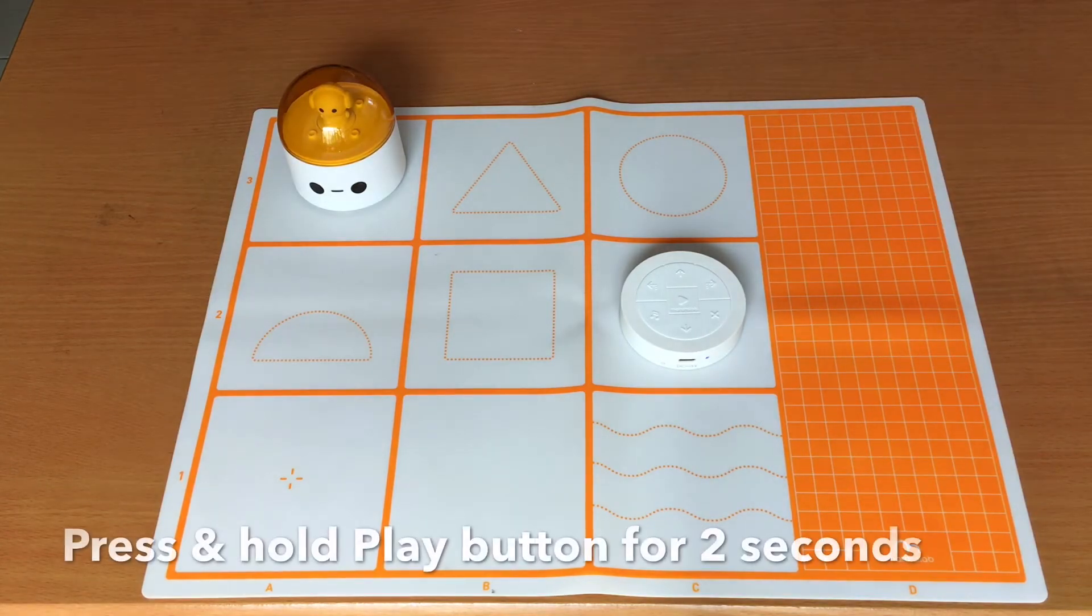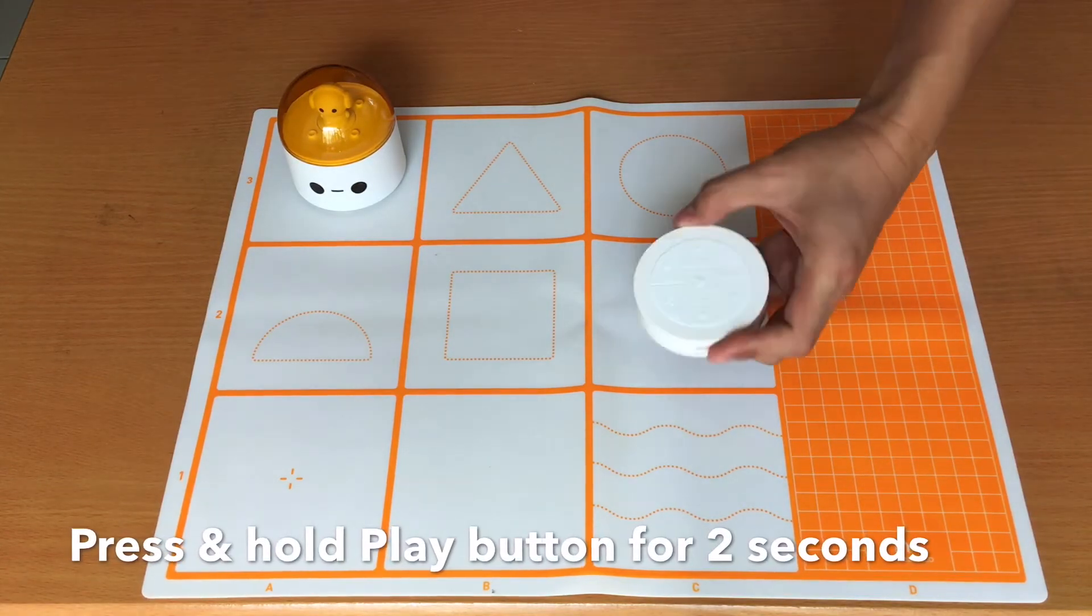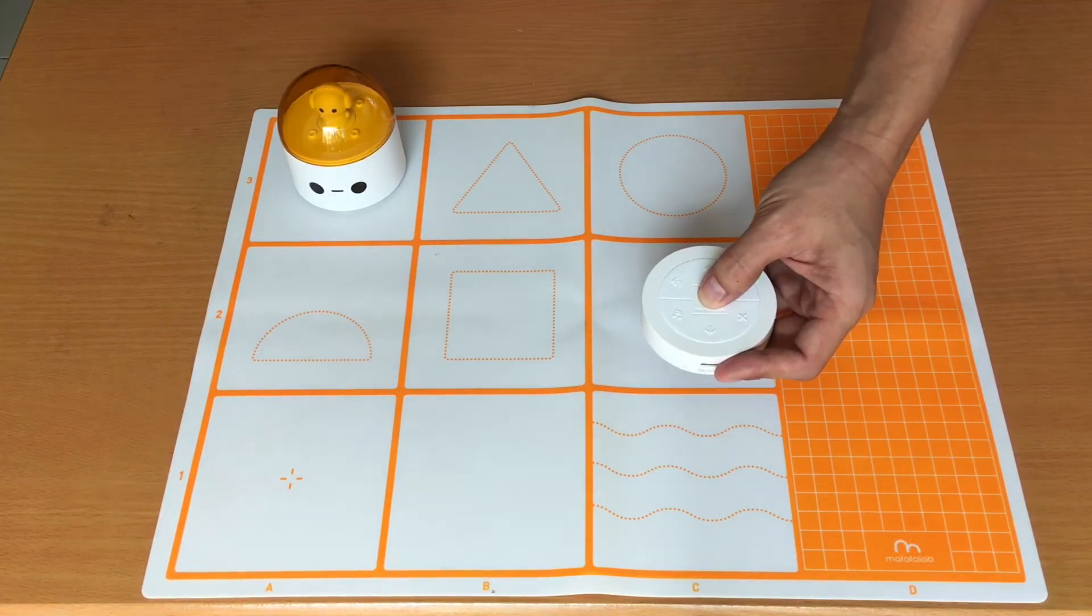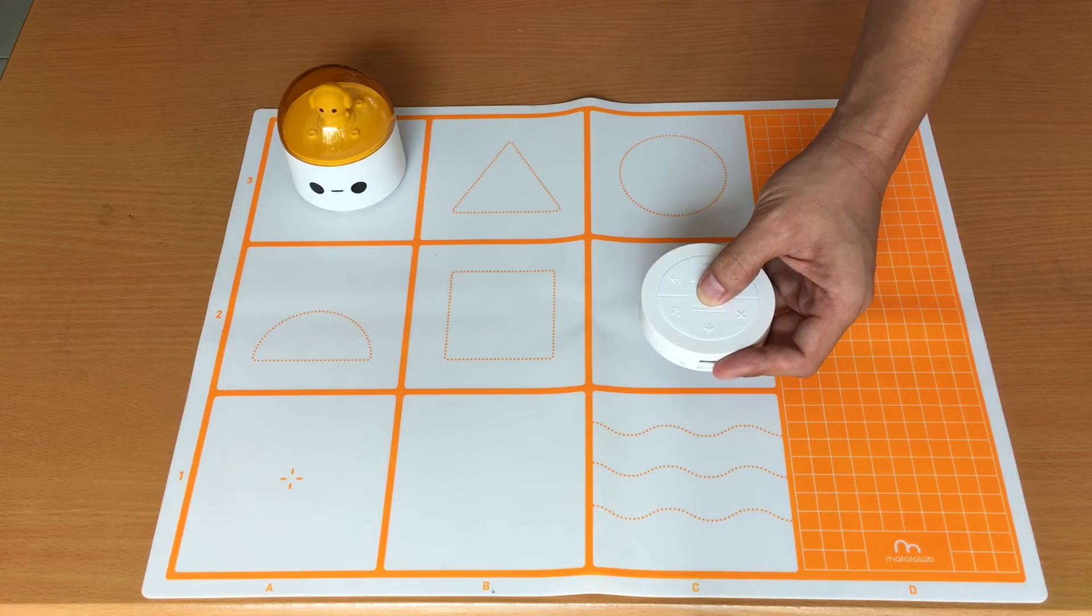To enter the gyro control, press and hold the play button for 2 seconds. And while still holding it, just tilt the controller to move the Matatalabot.